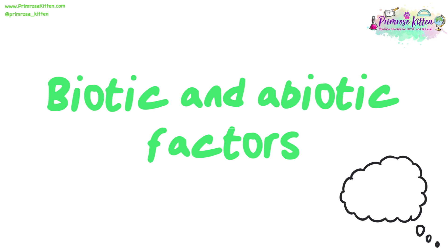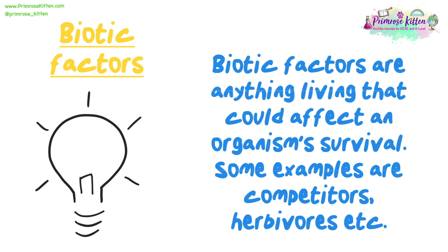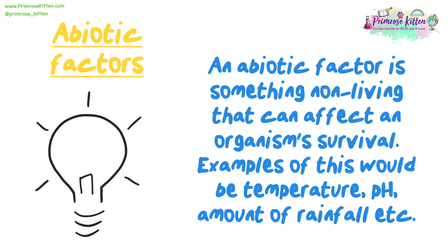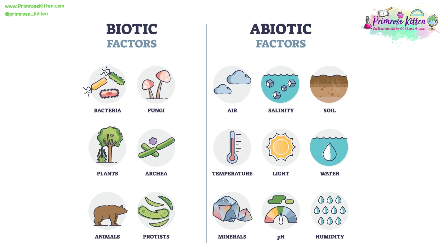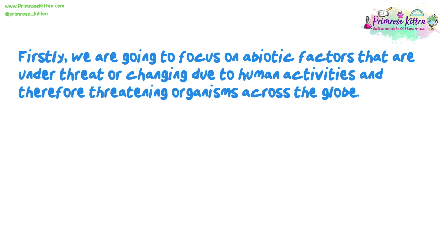Next we are going to look at biotic and abiotic factors. Biotic factors are anything living that could affect an organism's survival — examples include competitors and herbivores. An abiotic factor is something non-living that can affect an organism's survival, such as temperature, pH, or the amount of rainfall. We are now going to focus on abiotic factors that are changing due to human activities and therefore threatening organisms across the globe.